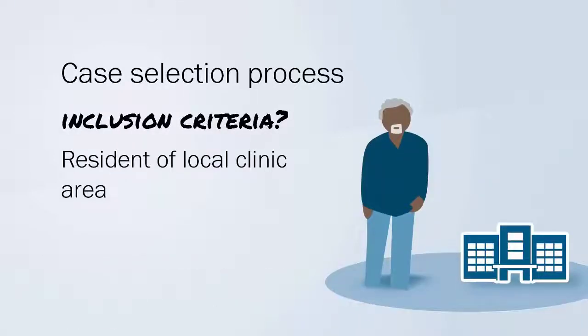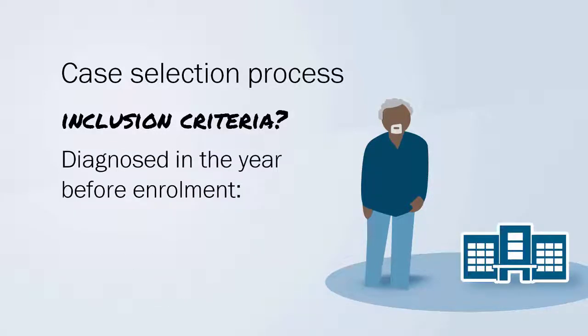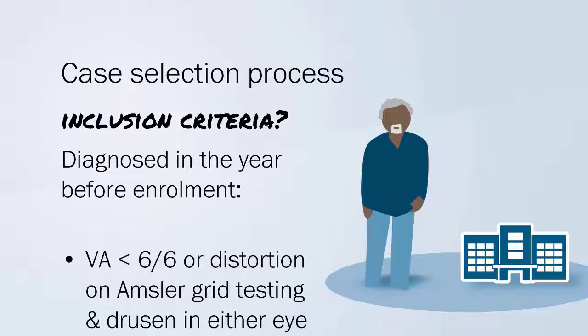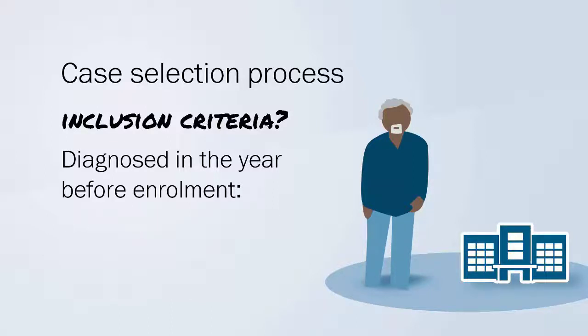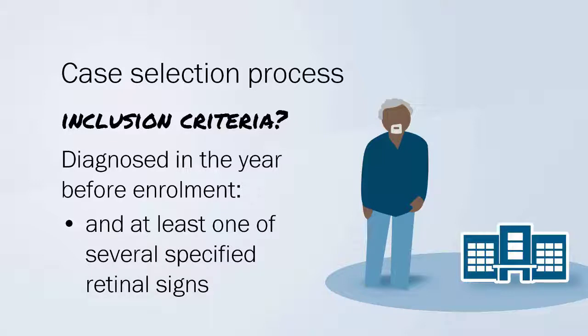A resident of the local clinic area, aged 55 to 80, diagnosed in the year before enrolment into the study with a visual acuity worse than 6-6 or distortion on Amsler grid testing, and any drusen in either eye, and at least one of several specified retinal signs.